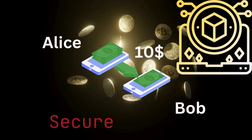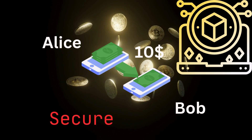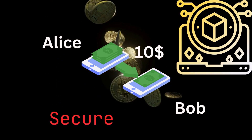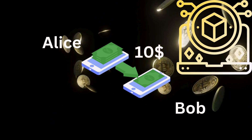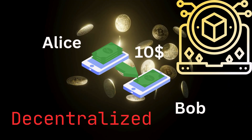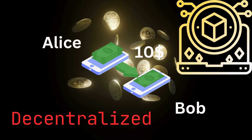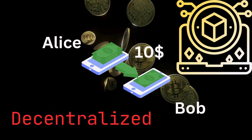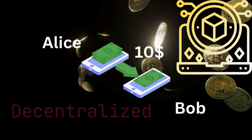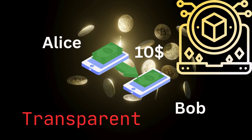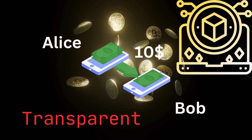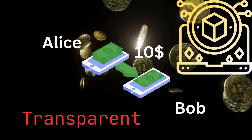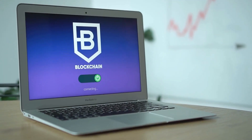Why is blockchain secure? 1. Tamper-proof: once a transaction is recorded, no one can change it. 2. Decentralized: no single authority, like a bank, controls it. 3. Transparent: anyone can verify transactions, but cannot change them.